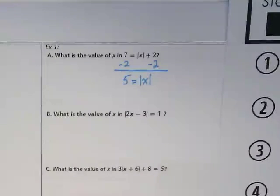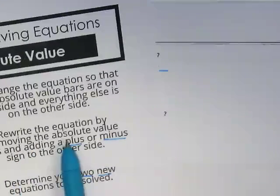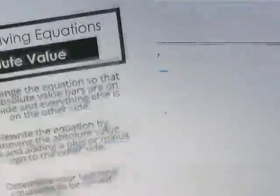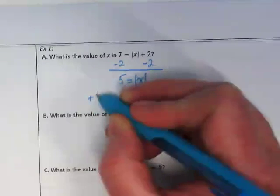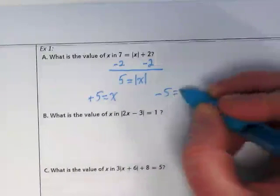So what we're going to do here is we're going to rewrite this. Remember our second step? Rewrite the equation by removing the absolute value bar and adding a plus or minus to the other side. So we're going to rewrite this as positive 5 is equal to x and negative 5 is equal to x.